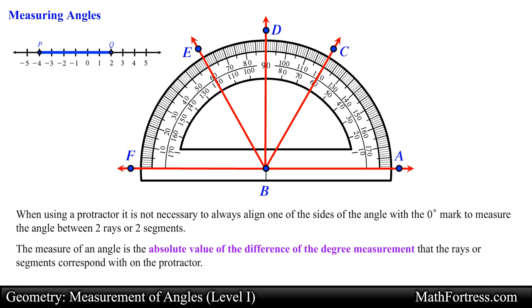Similar to the way we measured a line segment by using the coordinates of the endpoints, the measure of an angle is the absolute value of the difference of the degree measurement that the rays or segments correspond with on the protractor. For example the measurement of angle EBC can be found by taking the absolute value of the difference between 120 degrees and 60 degrees or the absolute value of the difference between 60 degrees and 120 degrees.